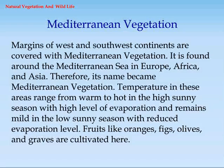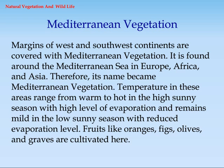Mediterranean Vegetation covers the margins of west and southwest continents. It is found around the Mediterranean Sea in Europe, Africa, and Asia, which is how it got its name. Temperature in these areas ranges from warm to hot in the high sunny season with high evaporation, and remains mild in the low sunny season with reduced evaporation. Fruits like oranges, figs, olives, and grapes are cultivated here.